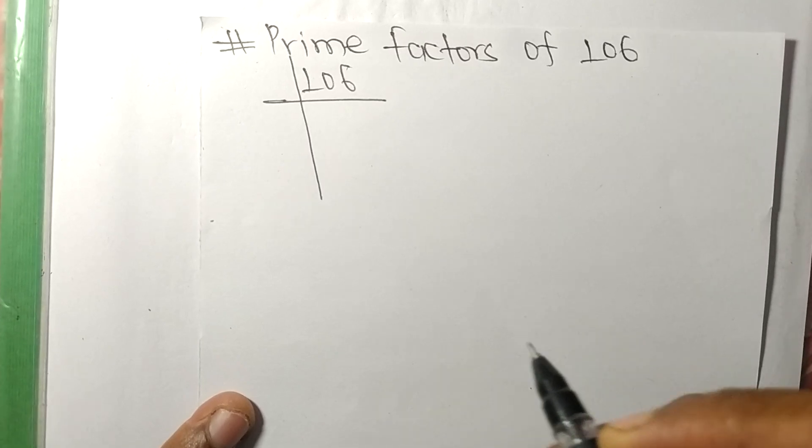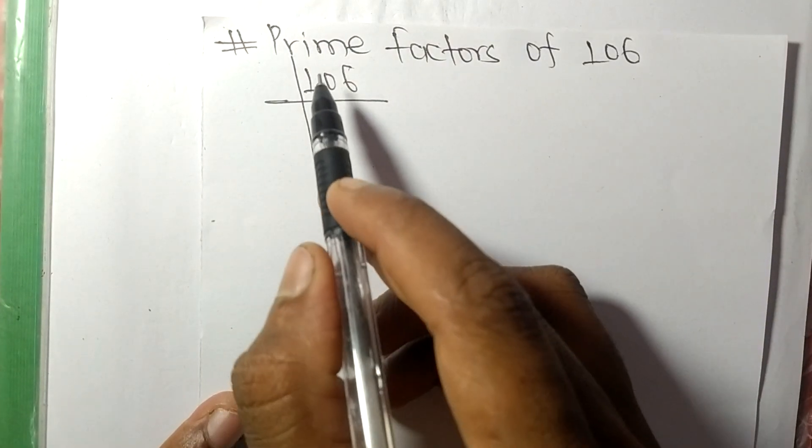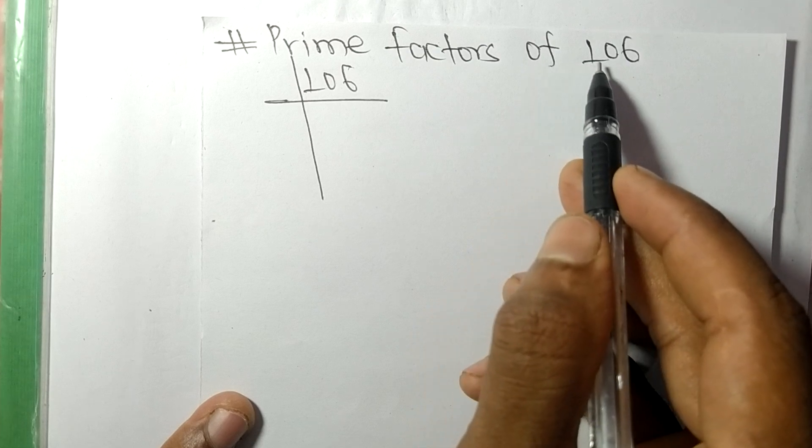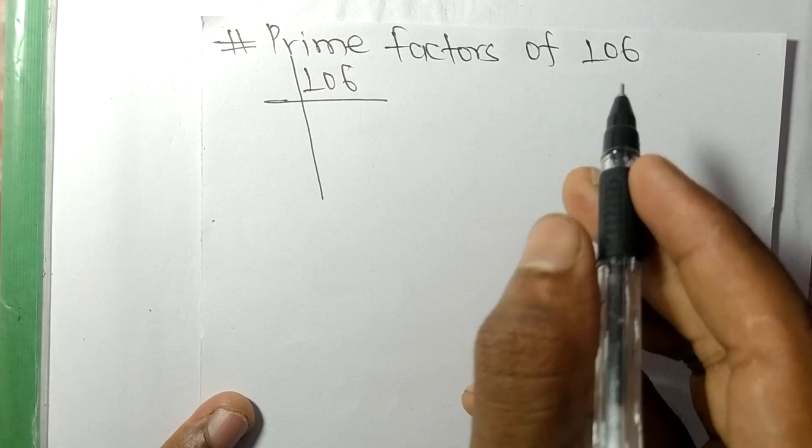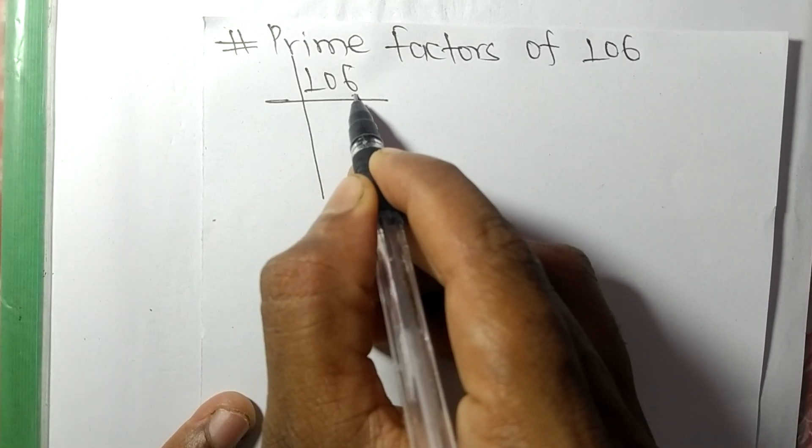So today in this video we shall learn to find the prime factors of 106. So here it contains an even number, 6 at last, so this whole number is divisible by 2.